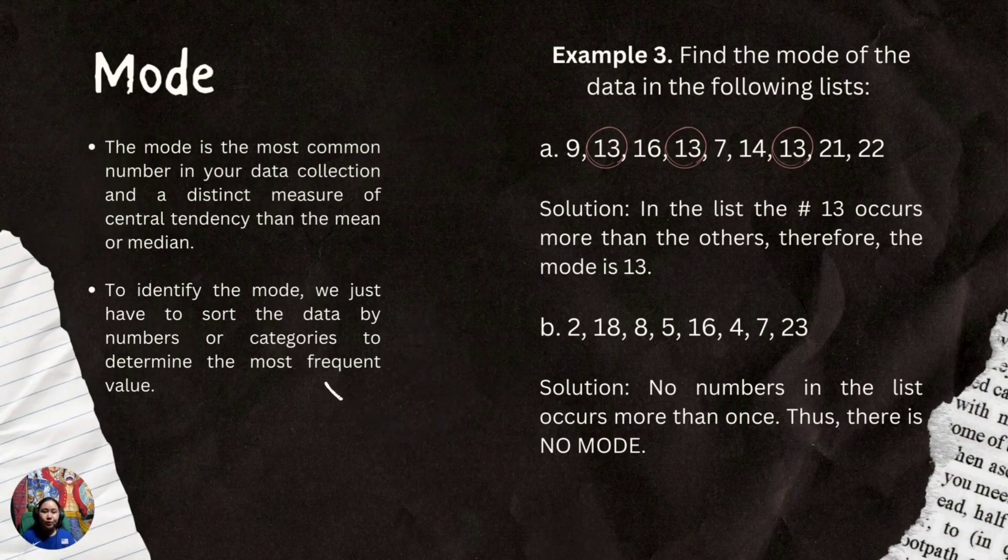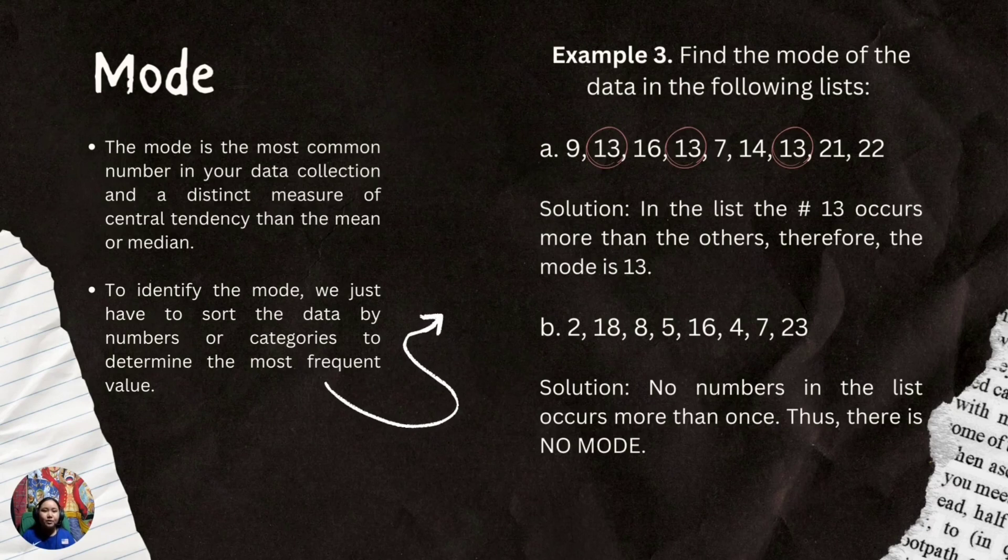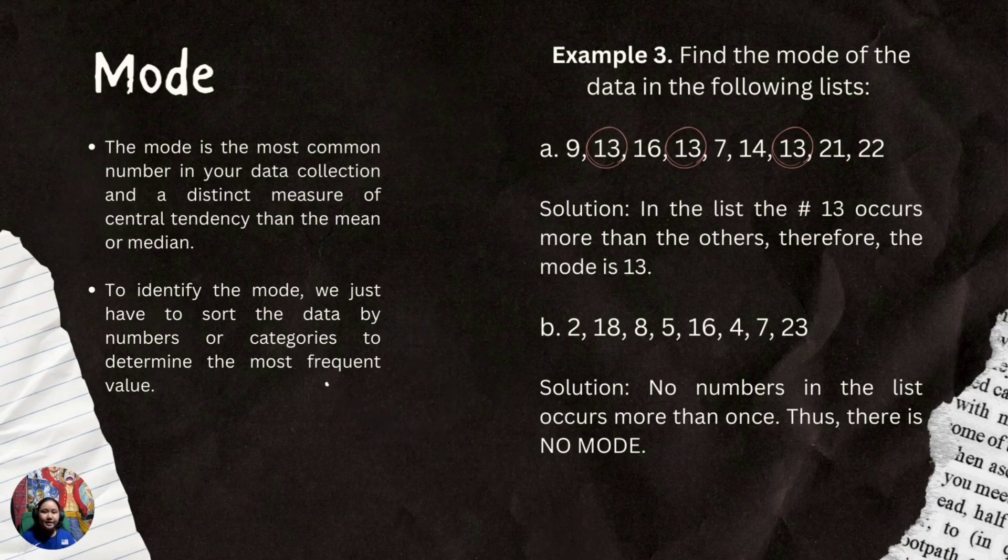Lastly, the mode. The mode is the most common number in your data collection and a distinct measure of central tendency different from the mean or median. To identify the mode, we just have to sort the data by numbers or categories to determine the most frequent value.